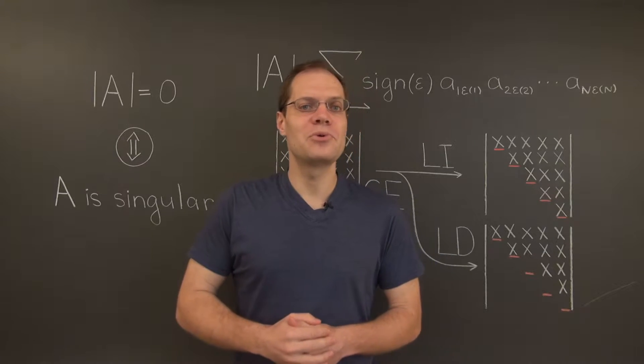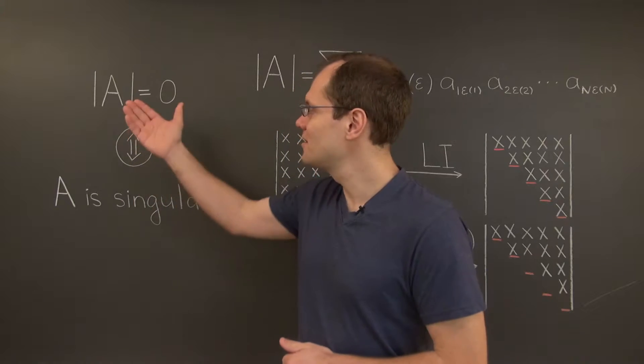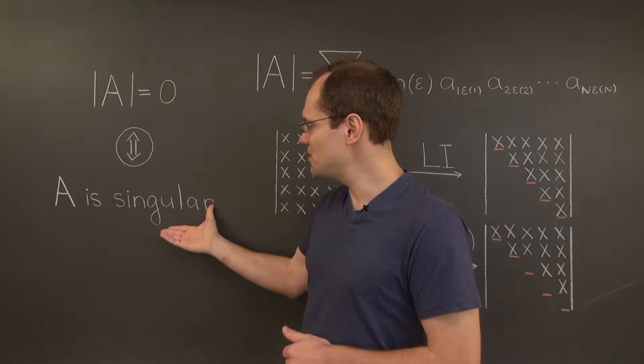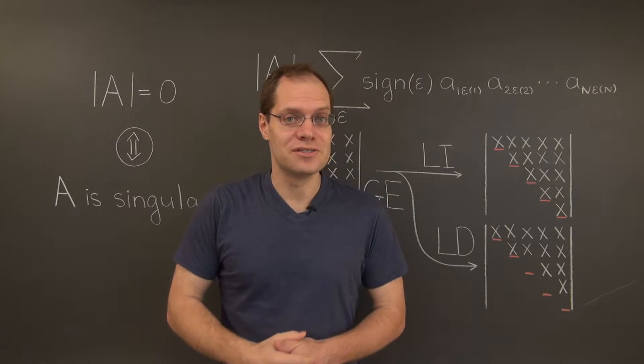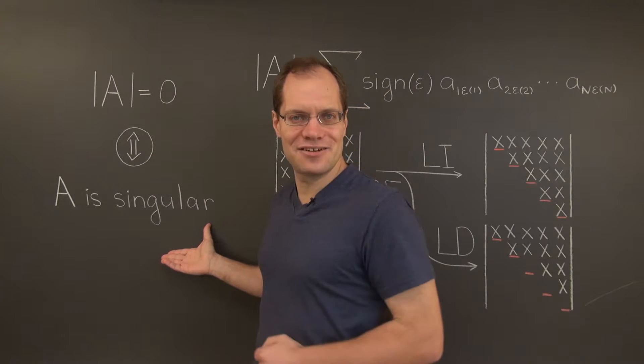We're now ready to show what we've been calling the governing property, which is the statement that the determinant being zero is equivalent to the matrix being singular. In other words, when the determinant is zero, the matrix is necessarily singular.